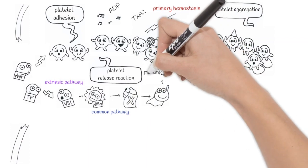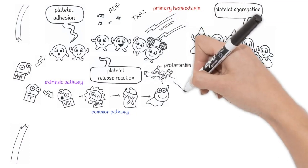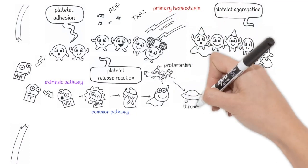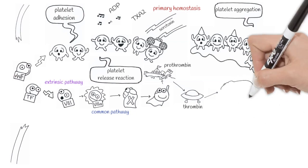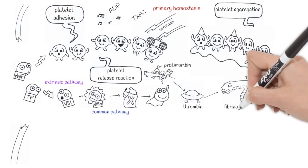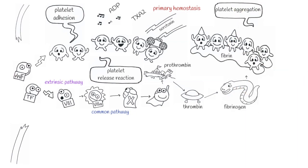Factor X activated transforms prothrombin into thrombin that transforms fibrinogen into fibrin where platelets remain attached.